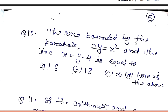Question number ten: the area bounded by the parabola 2y = x² and the line x = y − 4 is equal to — four options are given.